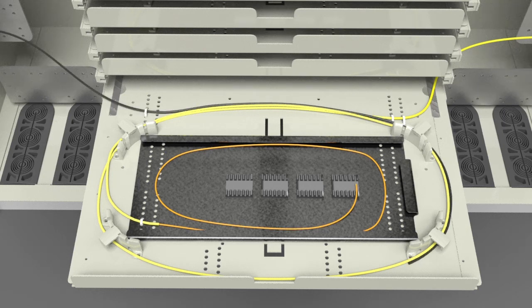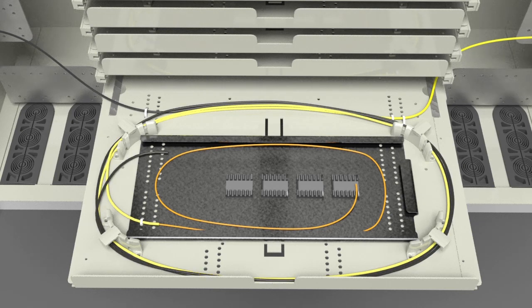Route the OSP subunit clockwise around the radius limiters and enter the splice tray at the left side top. Secure the subunit to the tray.